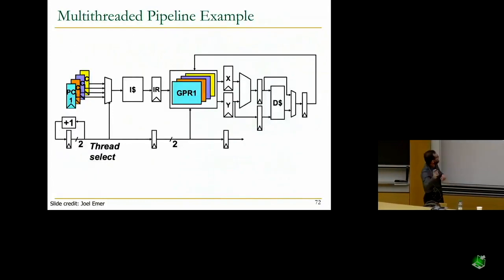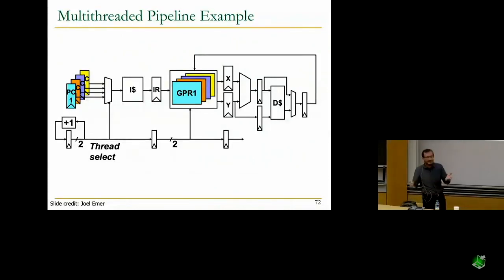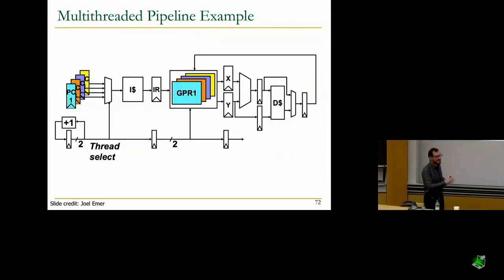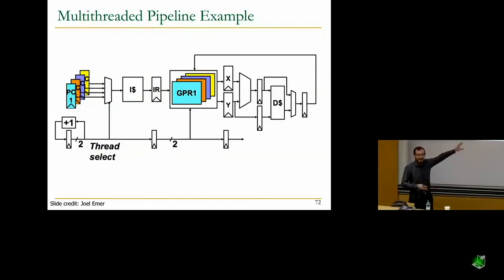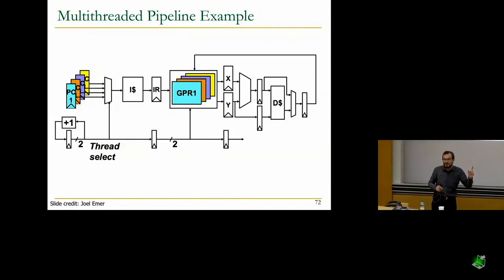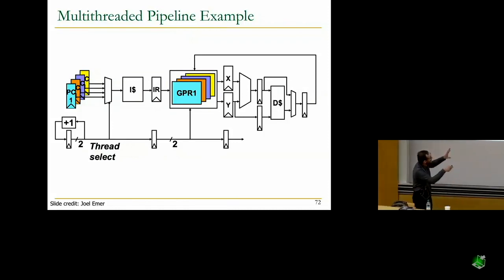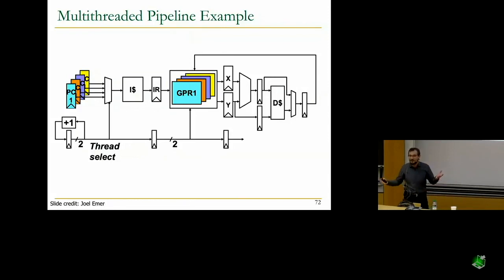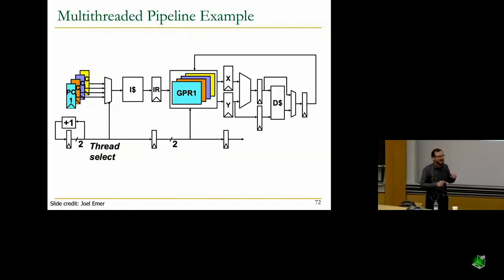To answer the earlier question: you have multiple program counters and general-purpose registers that are per-thread. You fetch using thread selection logic. Existing superscalar out-of-order processors are also similar to this, except they don't employ fine-grain multi-threading. Fine-grain means every cycle you fetch from a different thread. If you do that on a general-purpose machine, your single-thread performance suffers. But for fine-grain multi-threading, you need separate register files. With 120 threads, you need 120 register files, which means you have a MUX — though you can be more intelligent in the design.